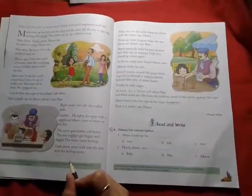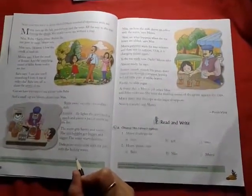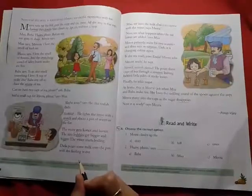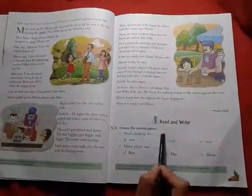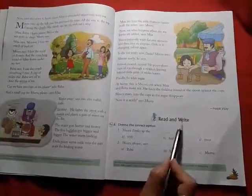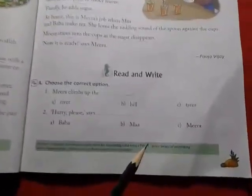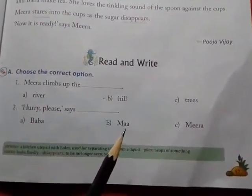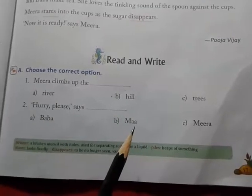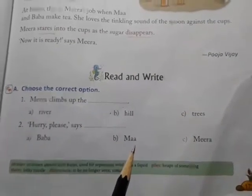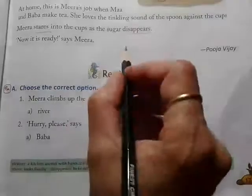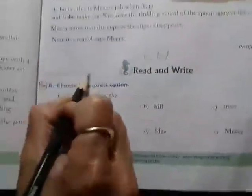Good morning children. I hope you have done the reading of the chapter A Cup of Cha. Now we will do the exercises — Read and Write on page 17. And before we start our written work, we have to write CW and today's date here.